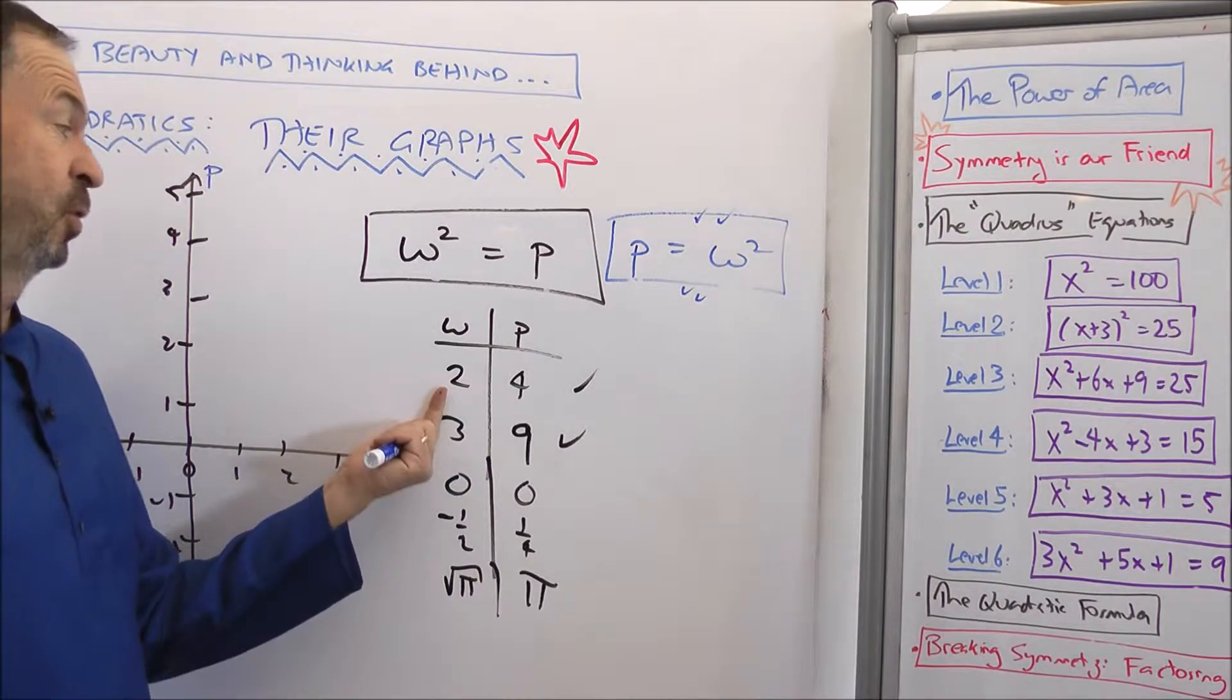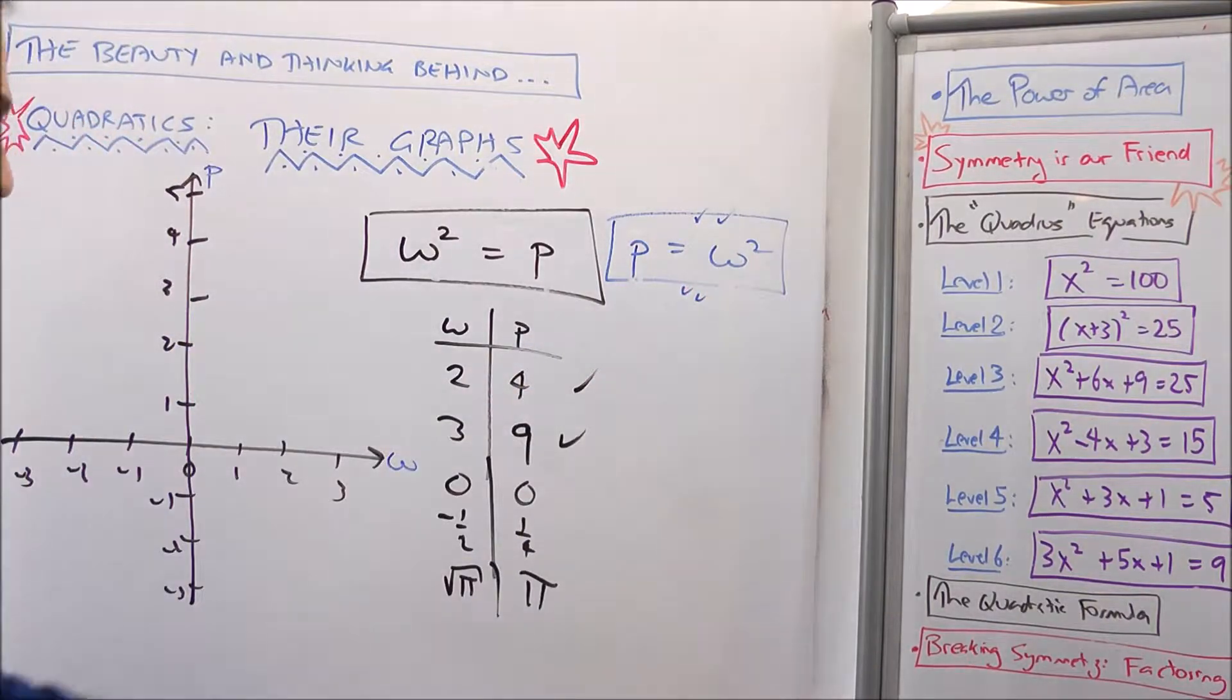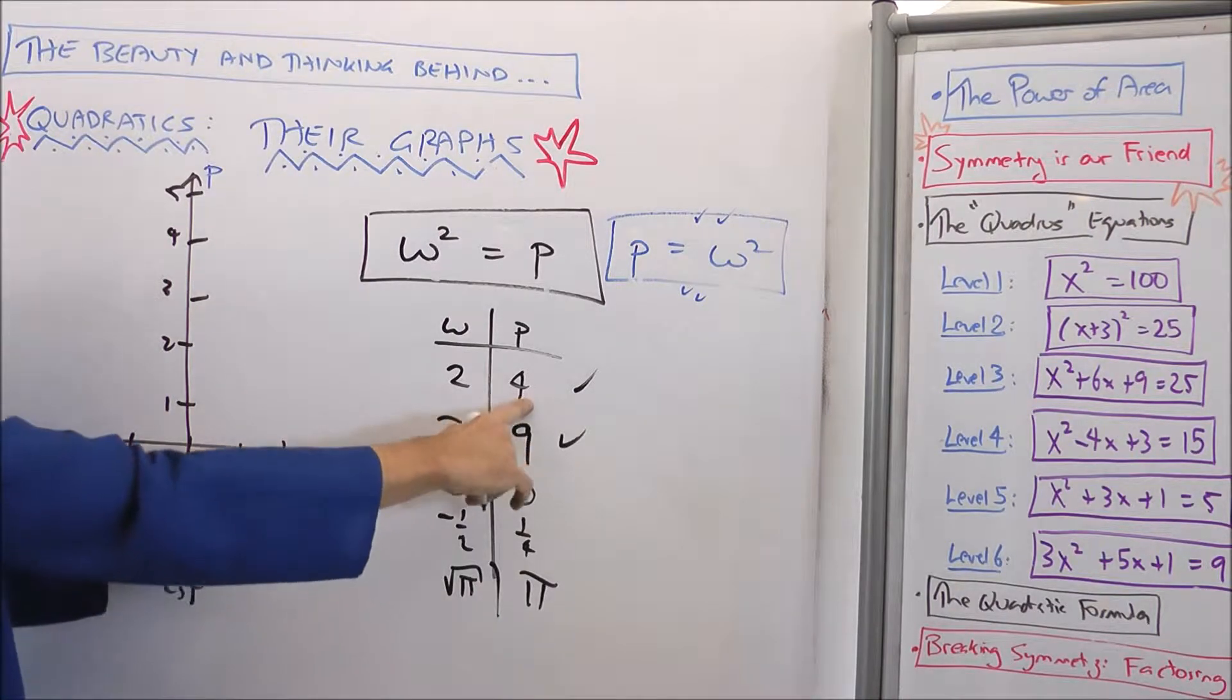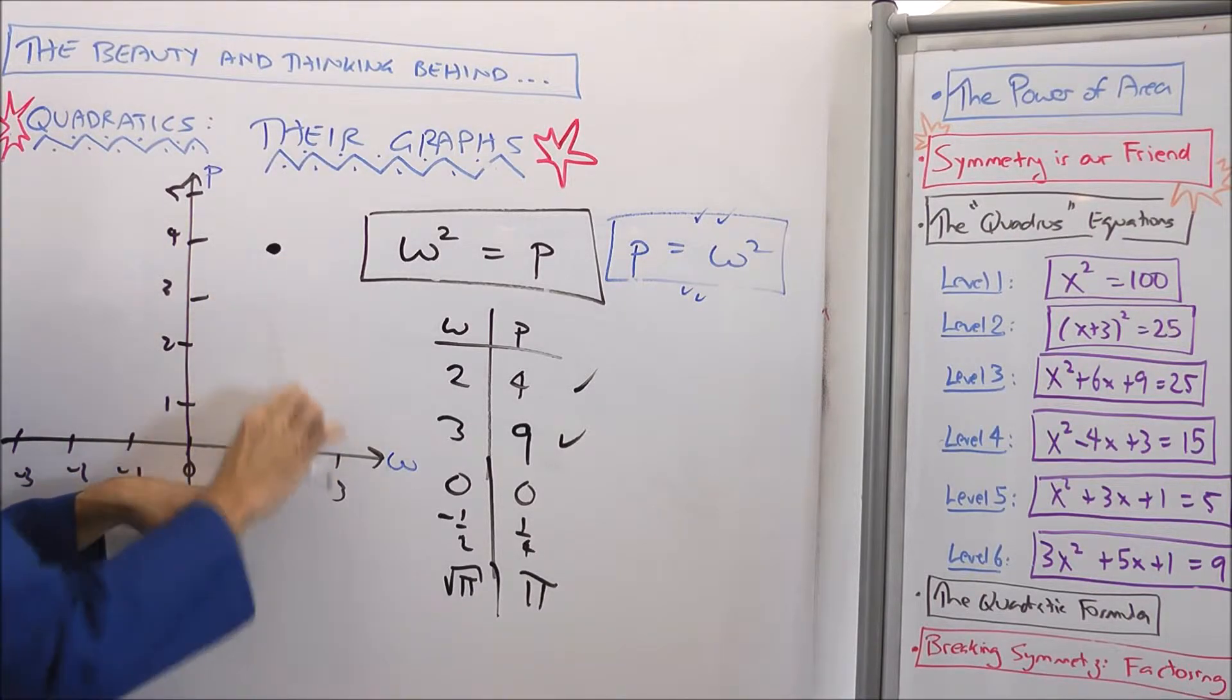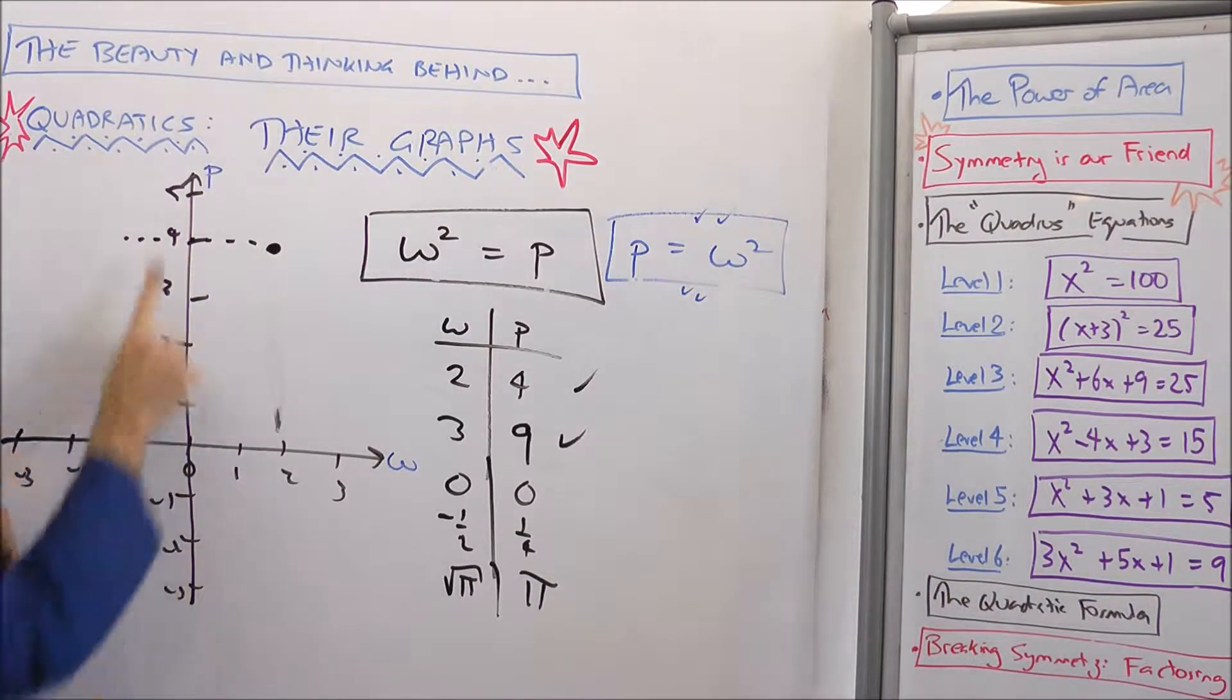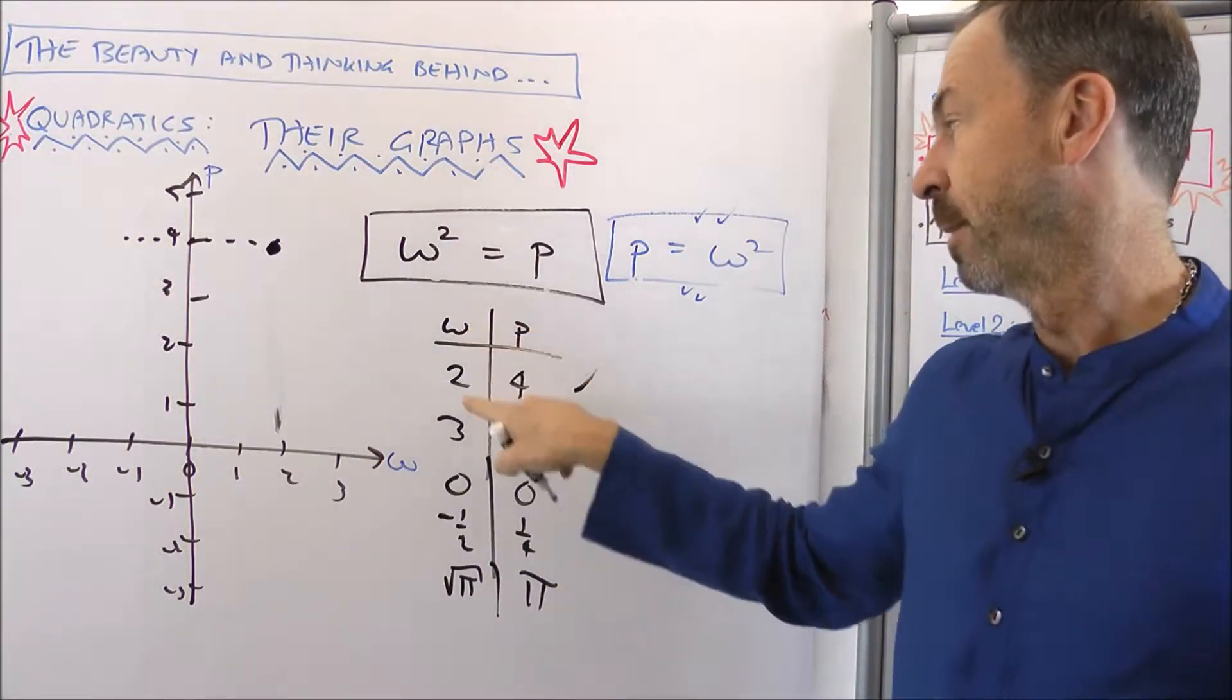So for example, here's a data point. When W is 2 and P is 4, we get a true number sentence. So what I'm going to do, W is 2, where's 2 on the number line for W? Right there. And to represent it's got the matching P value of 4, we'll just go up a height of 4: 1, 2, 3, 4, up to there. Height of 4 above 2. We can actually see the height of 4 because of the fact we drew a vertical axis for P. So this point here represents the data value 2, 4: 2 for W, 4 for P.